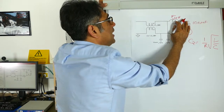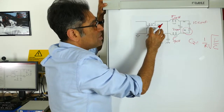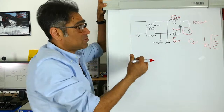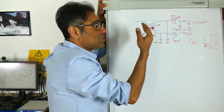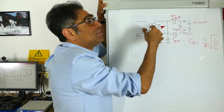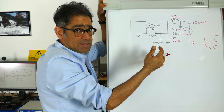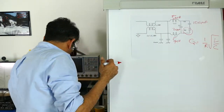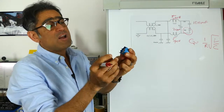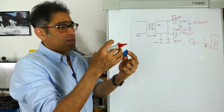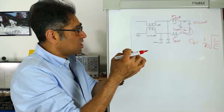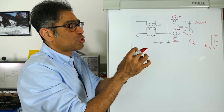Now we're going to have to select the components for the common mode section. If you remember from one of the previous videos, we said that the leakage inductance of a common mode choke manifests itself as differential mode inductance. So if we have a common mode choke — here is one that we have — there is a certain amount of leakage within it which manifests itself as the differential mode inductance.